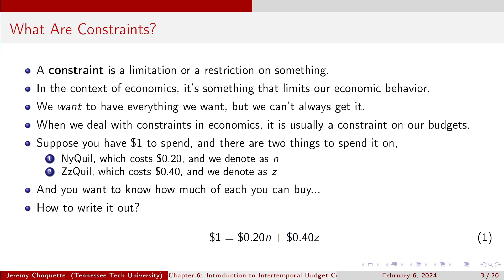So what is a constraint? At the end of the day, a constraint is a limitation or a restriction on what we do. In economics, it tends to limit our economic behavior and our decision making. We want to have everything — we're just this lump of unlimited wants. We all have things we want. But as that Rolling Stones song goes, you can't always get what you want. With our unlimited wants, constraints reel us back into reality.